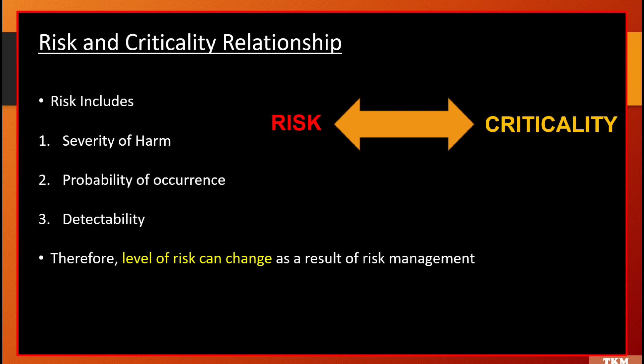We need to understand the relationship between risk and criticality in order to understand how to assess the risk. Risk includes three things: severity of harm, probability of occurrence, and detectability — how severe the harm is, what is the probability it will occur, and if it occurs, can we detect it? These are the three main pillars of how we assess the risk. Therefore, the level of risk can change as a result of risk management — if we detect the risk and reduce its probability, obviously the level of risk will change.